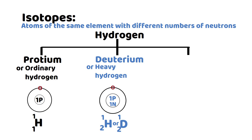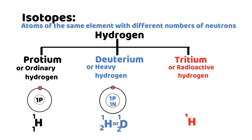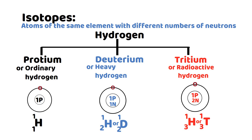The third isotope of hydrogen is called tritium, or radioactive hydrogen. It is shown by the symbol H-1-3, or T-1-3. This tritium has one proton and two neutrons in the nucleus, while one electron is present in the first shell.